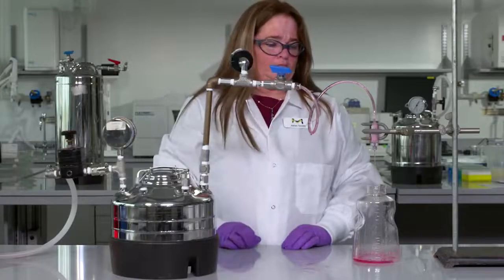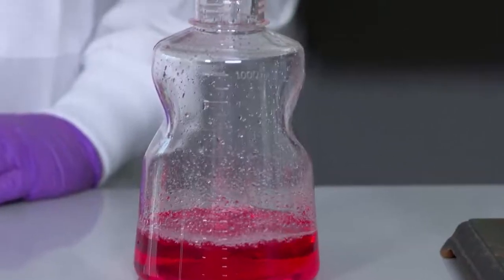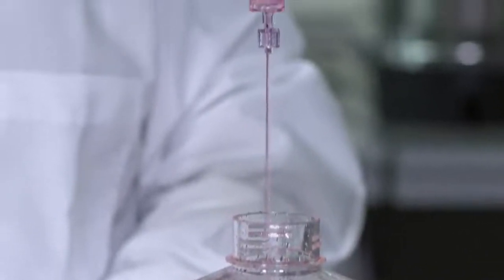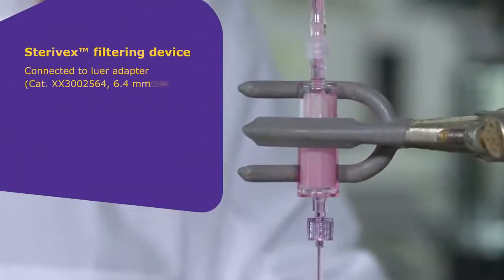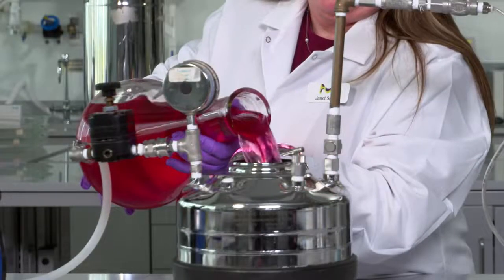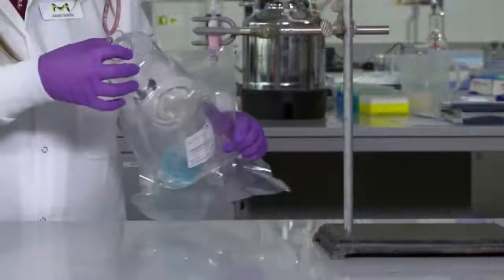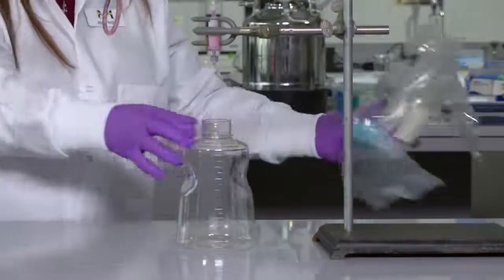The Sterivex units are non-toxic self-venting devices capable of withstanding pressures up to 3.1 bar. Sterivex filtering device connected to a lure adapter, 6.4 mm hose barbed to a lure lock adapter. Outlets have additional tubing or connections as applications dictate. Here we will be using a simulated media and sterile receiving flask to collect filtered medium.